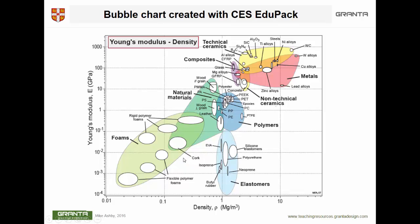This is what a real chart looks like made with the software. Here are metals — the red lozenge. Here is magnesium, the lightest structural metal; here's tungsten, the heaviest. Steels, nickel, copper, titanium, zinc alloys all lie within that red envelope. Polymers are down here — polypropylene, polyethylene — in a completely separate area. Elastomers like neoprene and silicones are down there. Here are composites — CFRP and GFRP — lying on a trajectory between the polymer matrix and the ceramic fibers, so the composite bubble lies between those two extremes.